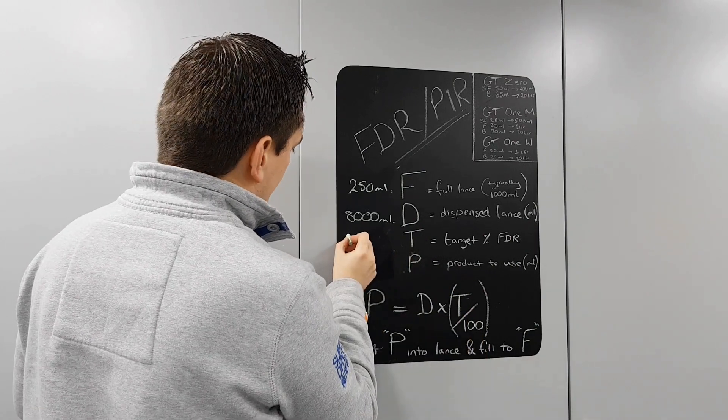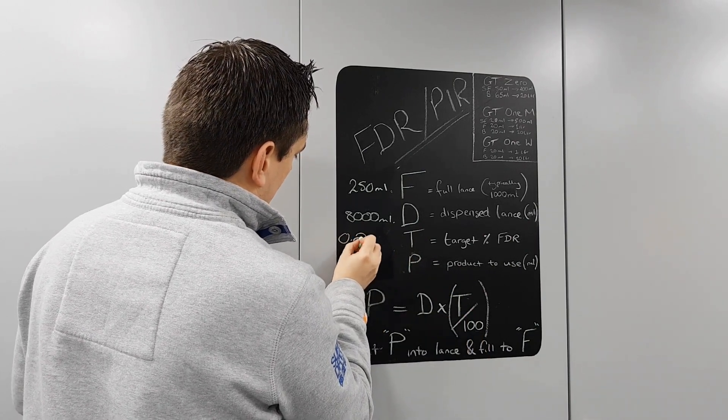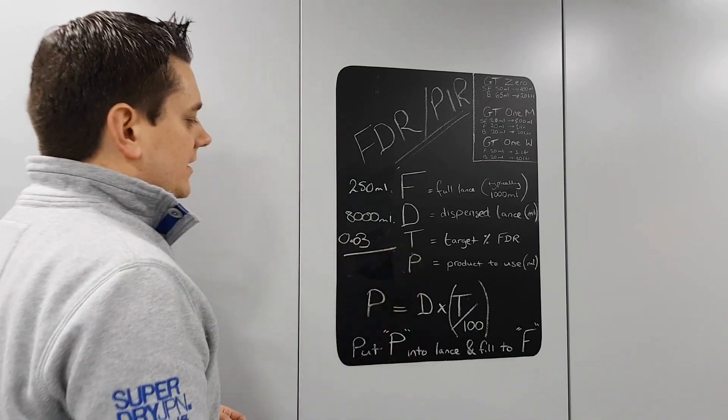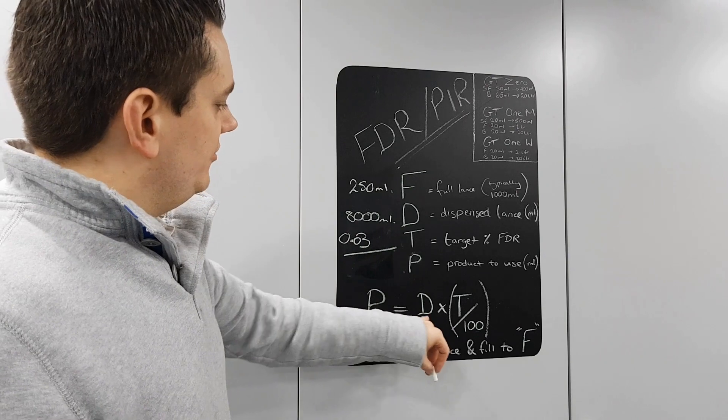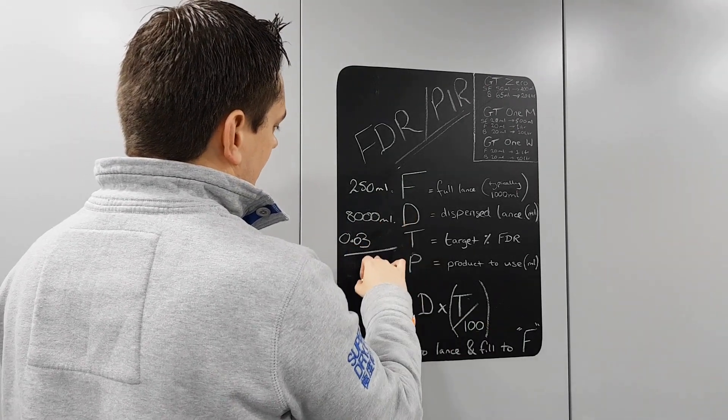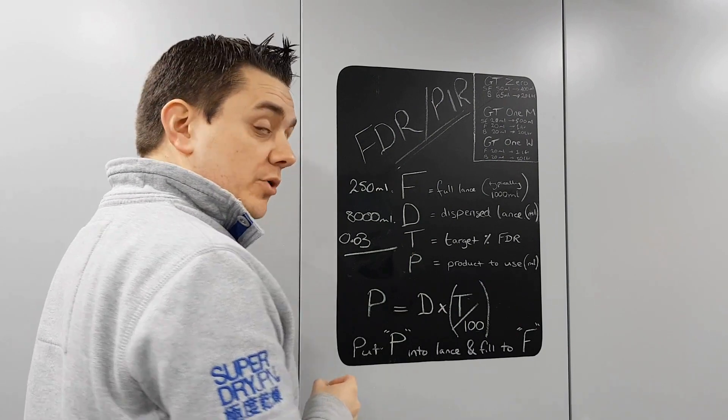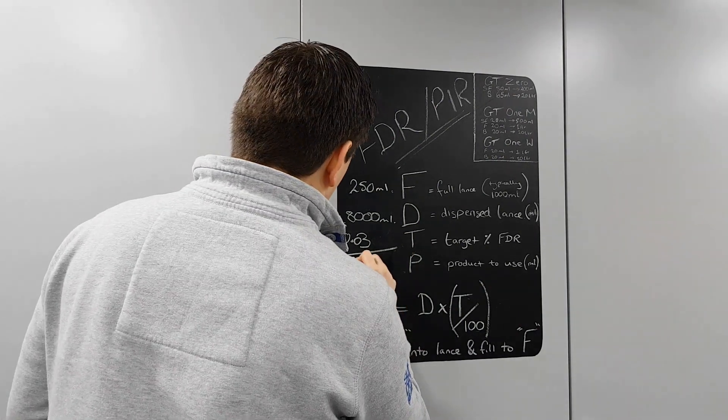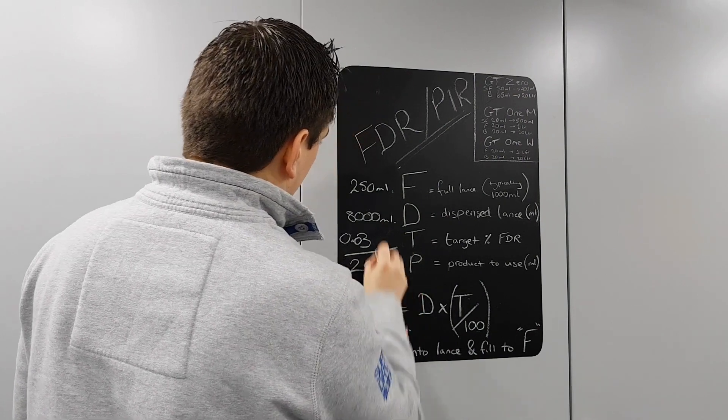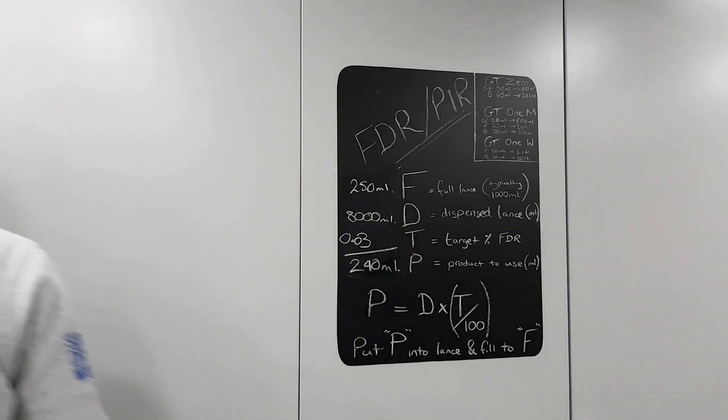Our target FDR was three percent. Now we have to do something with that. We have to divide that by 100, so that comes out at 0.03. So what we need now is P equals D times T. We've already done the divided by 100, so it's 8000 times by 0.03, and that comes out at 240 mils. That tells us two things.